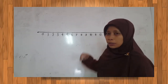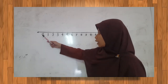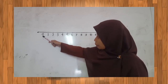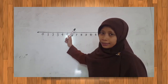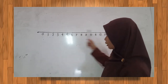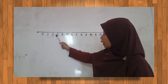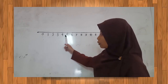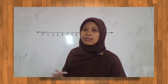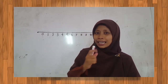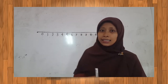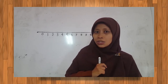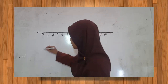Garis Bilangan. Dimulai dari angka 0 sampai seterusnya. Semakin ke kanan maka nilainya semakin besar, dari 0, 1, 2, 3, 4, 5, 6. Tetapi ketika menuju ke kiri maka nilainya semakin kecil. Ingat: ke kanan nilainya semakin besar, ke kiri nilainya semakin kecil. Contoh soal 1, coba dilihat ya anak-anak.